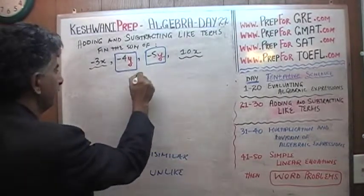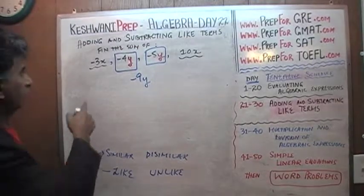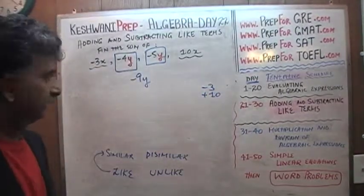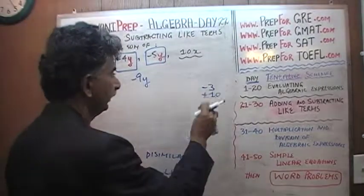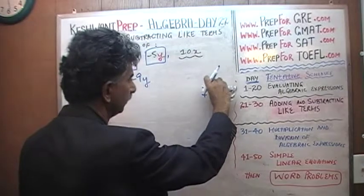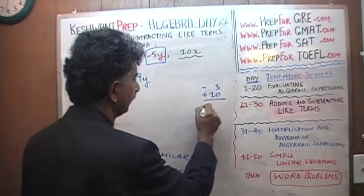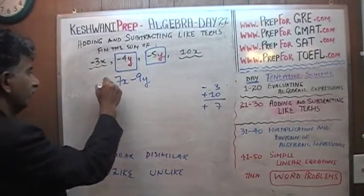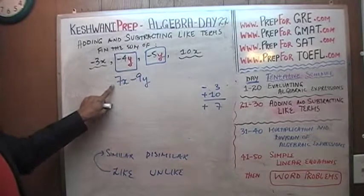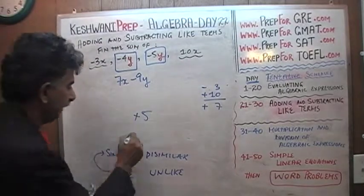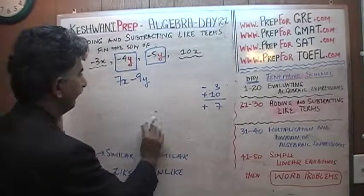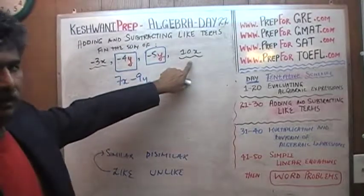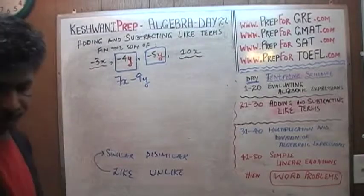These are like terms because they involve y's. How many y's do we have? We have negative 4 and negative 5, so we have negative 9y. How many x's do we have? We have negative 3 and positive 10. Negative 3 and positive 10 gives us positive 7x. Since it's positive 7 we don't have to write the positive sign — everyone understands that if there is no sign in front it's positive. So the sum of these four terms is 7x minus 9y.